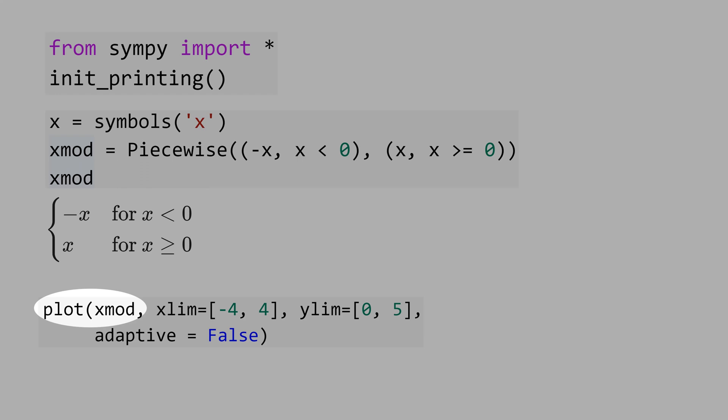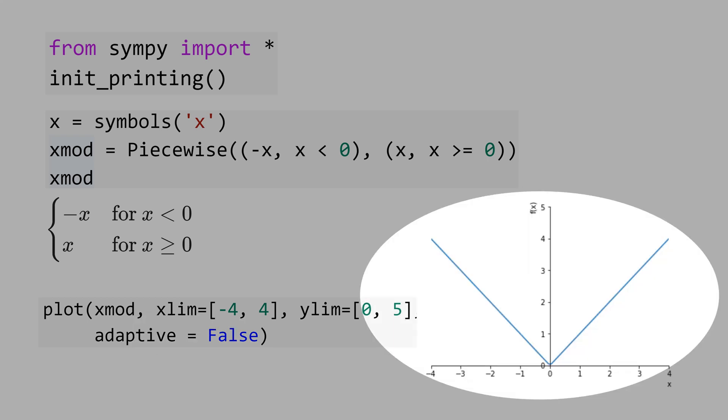Now let's plot xModule. And it's important here, to put false for adaptive. The default is true, and you are not going to get this graph here. You are going to get error. In other words, you have to turn off the adaptive algorithm, that plots a very accurate chart using a recursive sample. And this is because you are using this piecewise.